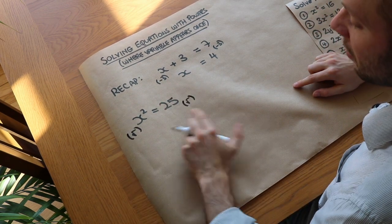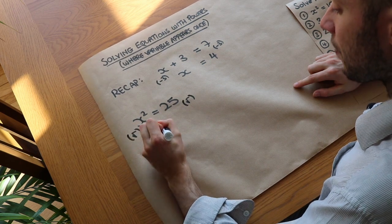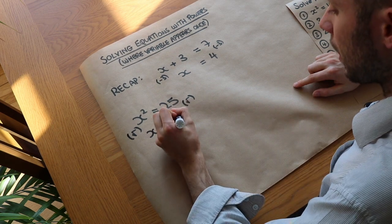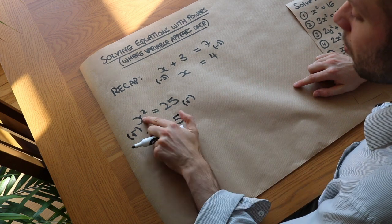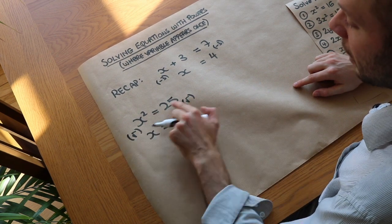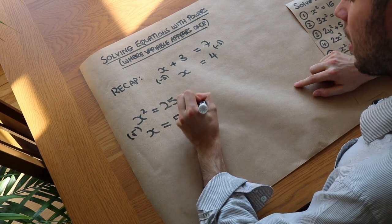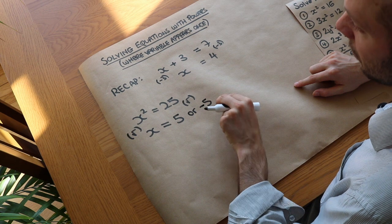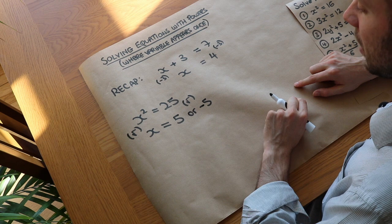If we square root both sides, that gets rid of the squared, leaving just x. The square root of 25 is 5. But there's actually a second solution — minus 5 — because minus 5 times minus 5, a negative times a negative, is positive, giving positive 25.